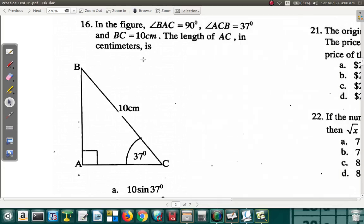Let's look at question 16. In the figure, angle BAC is 90 degrees, angle ACB is 37 degrees, and the length of side BC is 10 centimeters. The length of AC in centimeters is—that's this length. What is this length in centimeters?